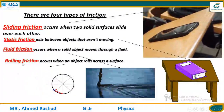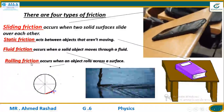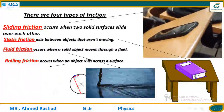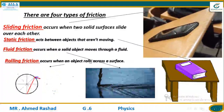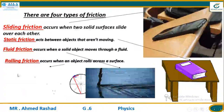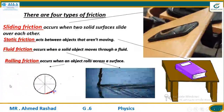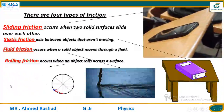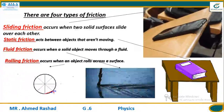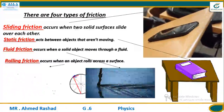Number four: rolling friction. Rolling friction occurs when an object rolls across a surface — like the wheels of a toy car. That kind of friction is called rolling friction. So we have four kinds of friction.